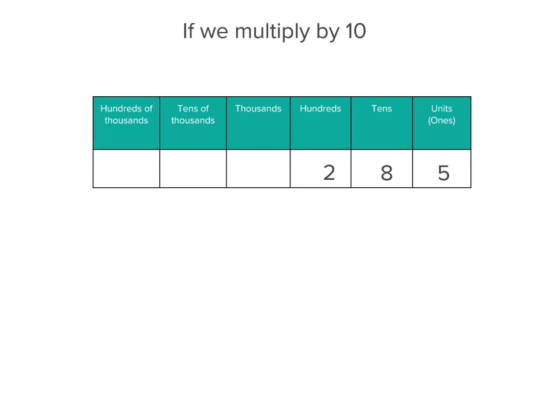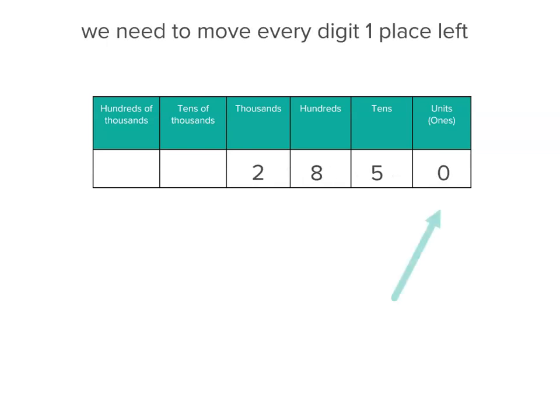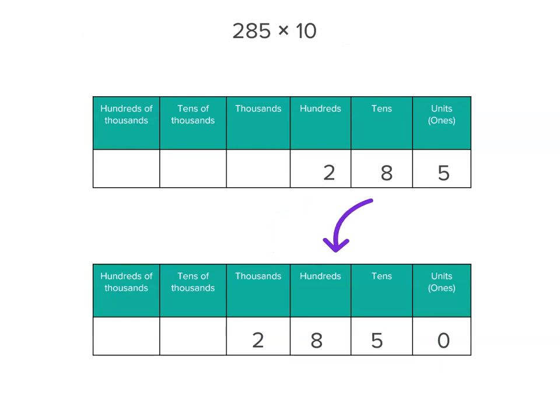Each of the digits moves one place to the left. And then we put a 0 at the end. That's the 0 placeholder. The 0 at the end tells us we've multiplied by 10. 2 hundreds move to the thousands place, the 8 tens move to the hundreds, and the 5 units move to the tens place. So 285 times 10 is 2,850.